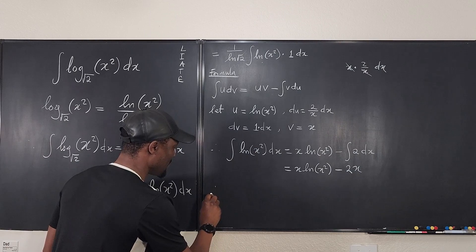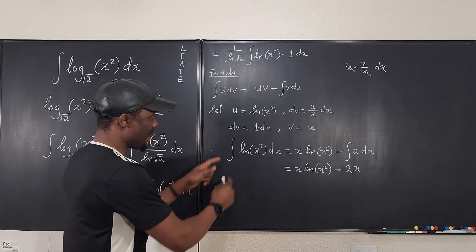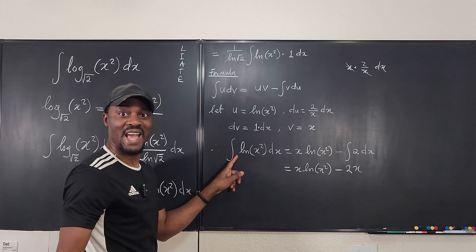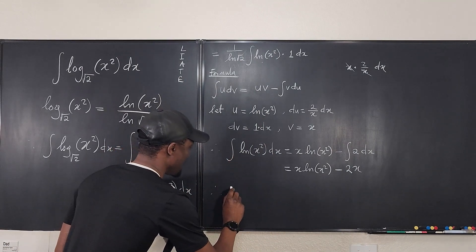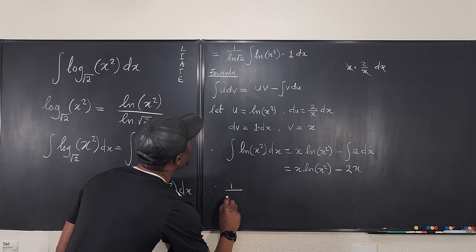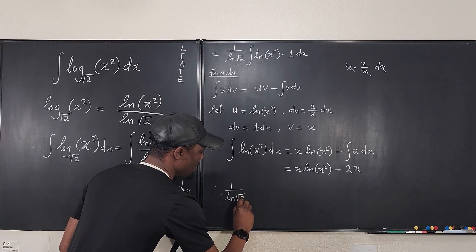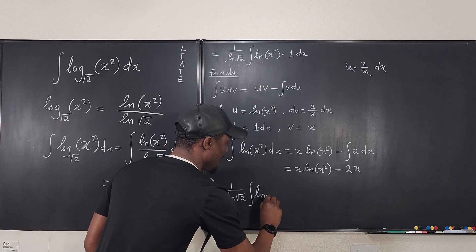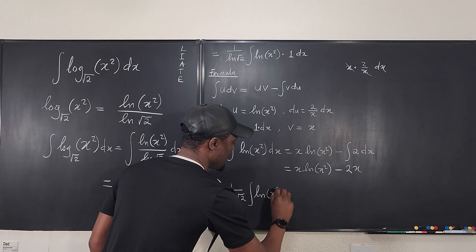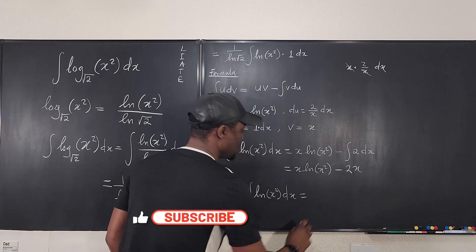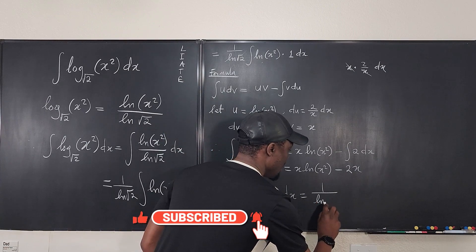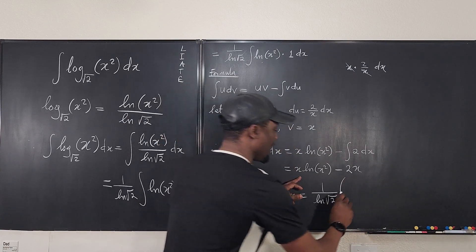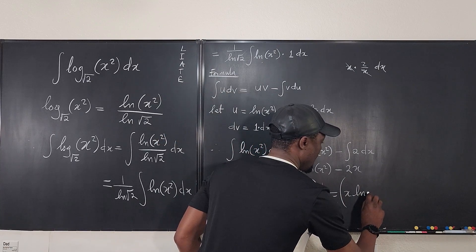Okay, so therefore, now I've gotten this. I just need to bring this back and then that's my answer. So I'm going to say that 1 over the natural log of the square root of 2 integral of ln of x squared dx is equal to 1 over ln of the square root of 2 multiplied by